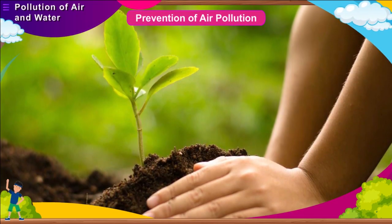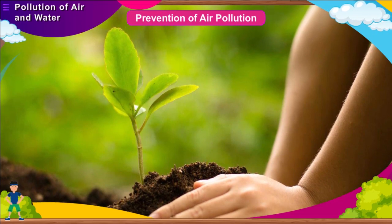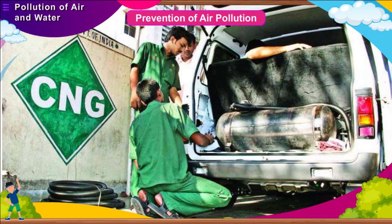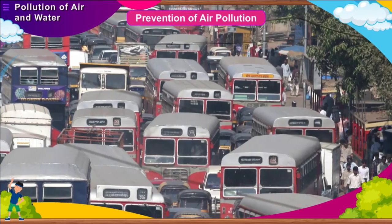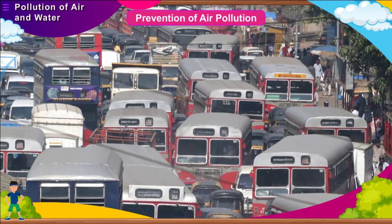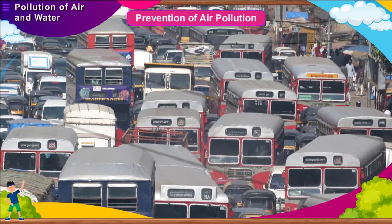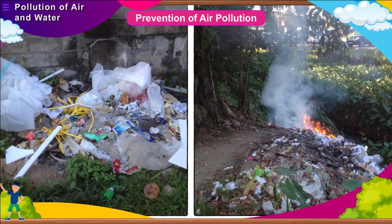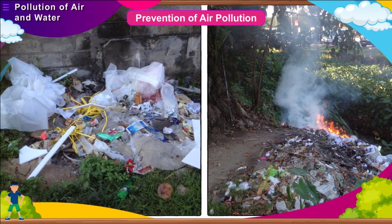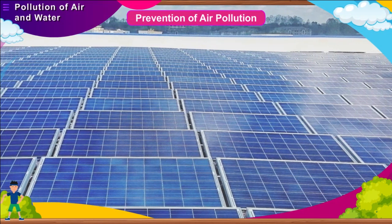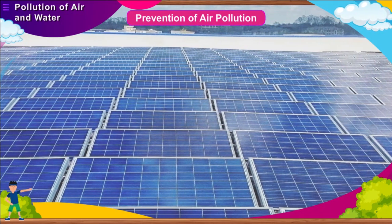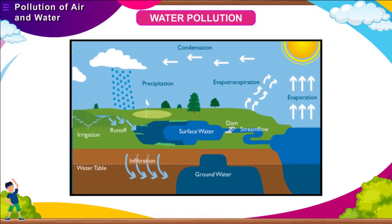Prevention of air pollution. Plant more trees for absorption of carbon dioxide and release of oxygen in the atmosphere. Start using CNG instead of petrol and diesel in automobiles. We should use public transport instead of private vehicles like cars and bikes. Burning of biodegradable waste should be stopped and it should be utilized in making compost. More effort should be made to develop alternate sources of energy like solar energy and fuel cells.